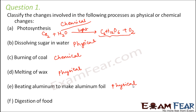Digestion of food — when food gets digested, it is broken down into simpler forms, so it is changing chemically. Complex carbohydrates are broken down into simple sugars, proteins are broken down into amino acids, fats are broken down into fatty acids, and so on. So digestion of food is a chemical change.